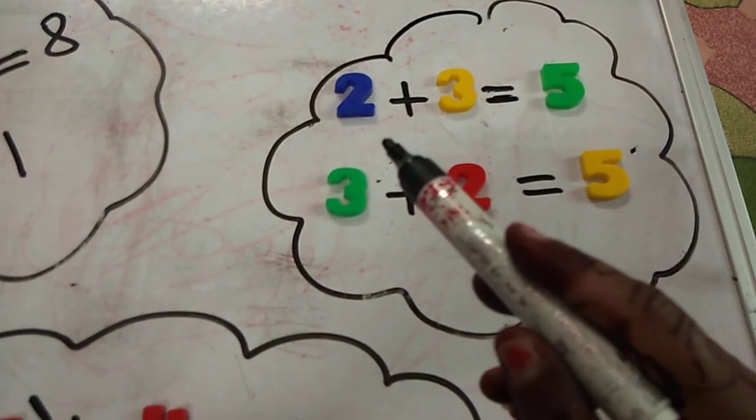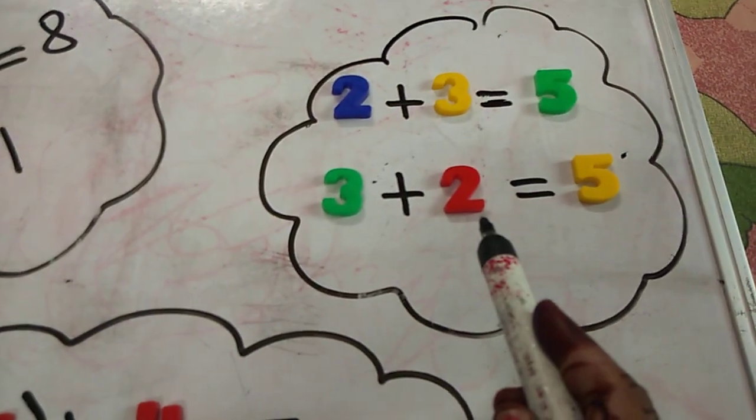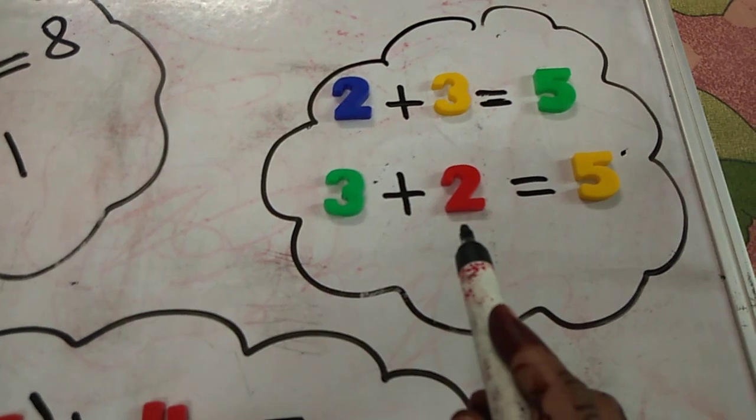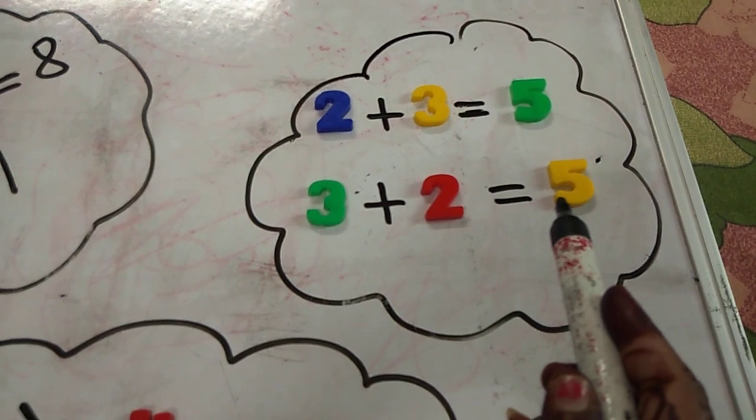So, whether we will write 2 plus 3, it will give us 5. Whether we will change the order of addends, that is 3 plus 2, then also the sum will never change. It will give us 5.